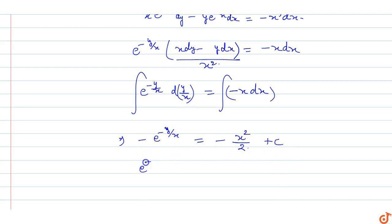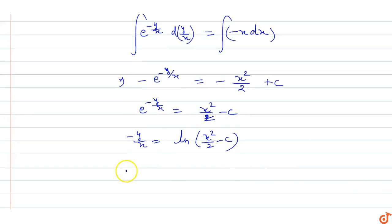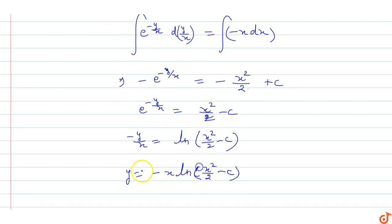Multiplying the whole equation by minus one, we get e^(-y/x) equals x squared by 2 minus c. Taking the natural log of both sides: minus y by x equals ln(x squared by 2 minus c).